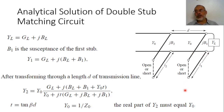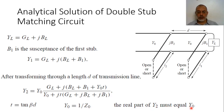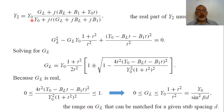We are going to design the first stub such that the input admittance just before the second stub has a real part equal to Y0. This means the real part of Y2 must equal Y0 — it may have an imaginary part, but the real part must be Y0, where Y0 = 1/Z0. By taking the real part of this equation and equating it to Y0, we obtain the following second-order equation in GL, BL, and B1.